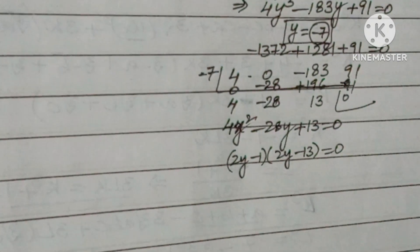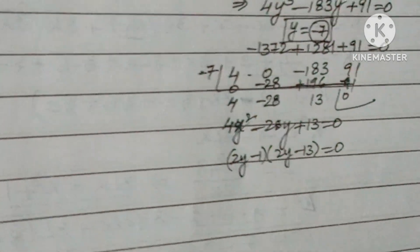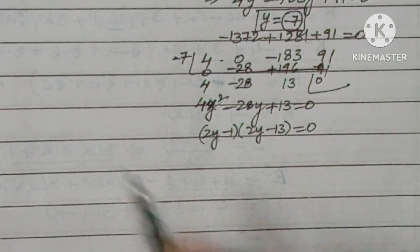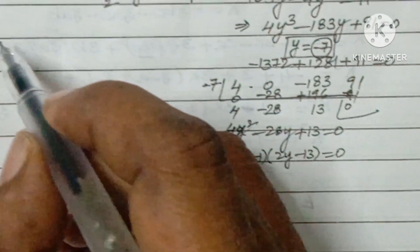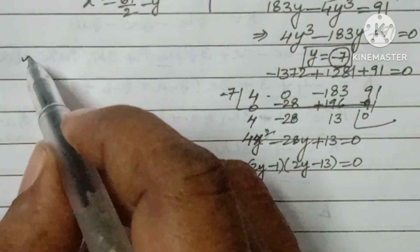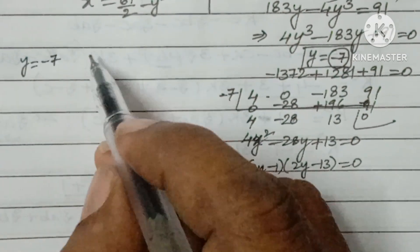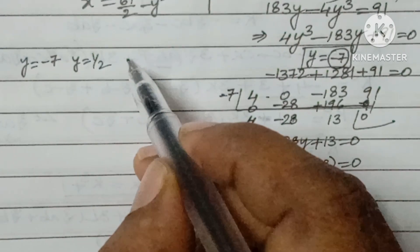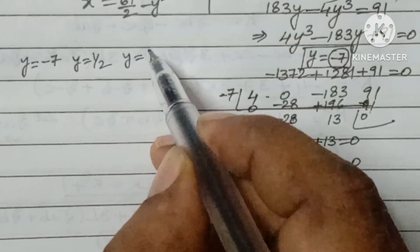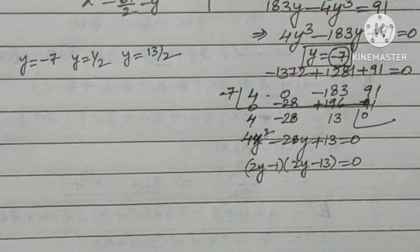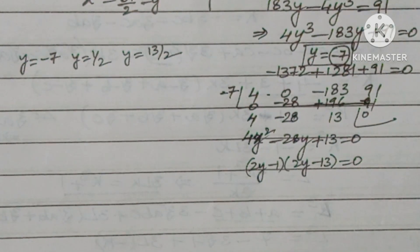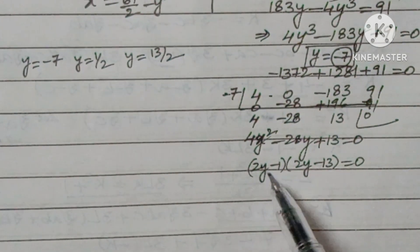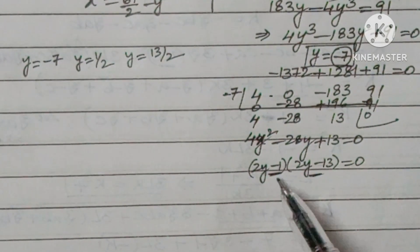So we now have three values of y: y = -7, y = 1/2, and y = 13/2.